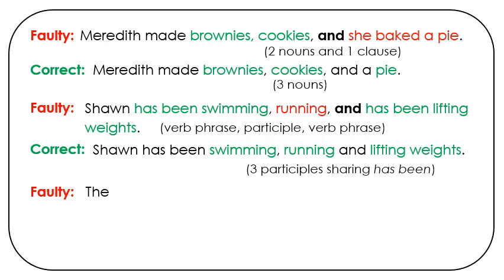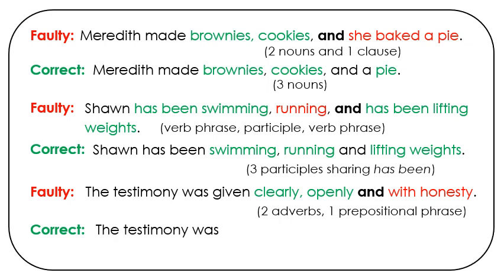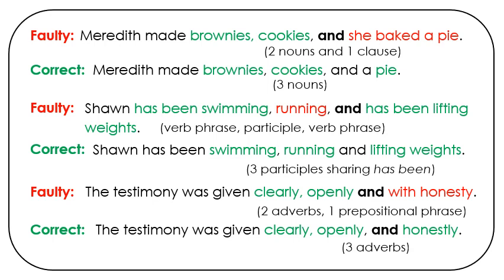Here's another faulty one: The testimony was given clearly, openly, and with honesty. We have two adverbs — clearly and openly — and then a prepositional phrase, which means that honesty is a noun. Correct version: The testimony was given clearly, openly, and honestly. Now we have three adverbs.